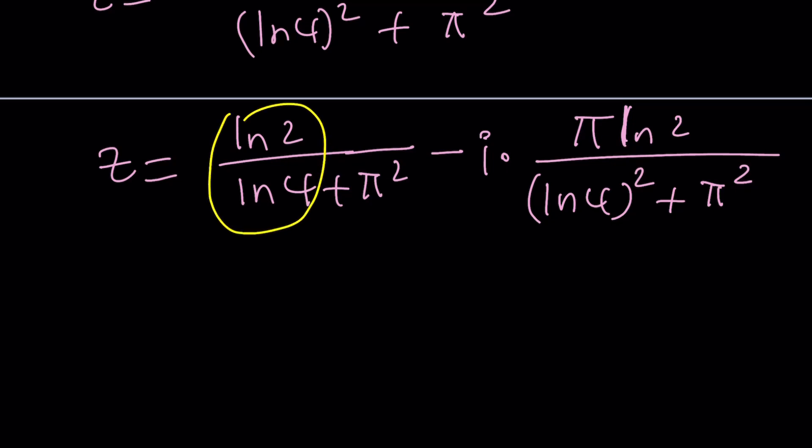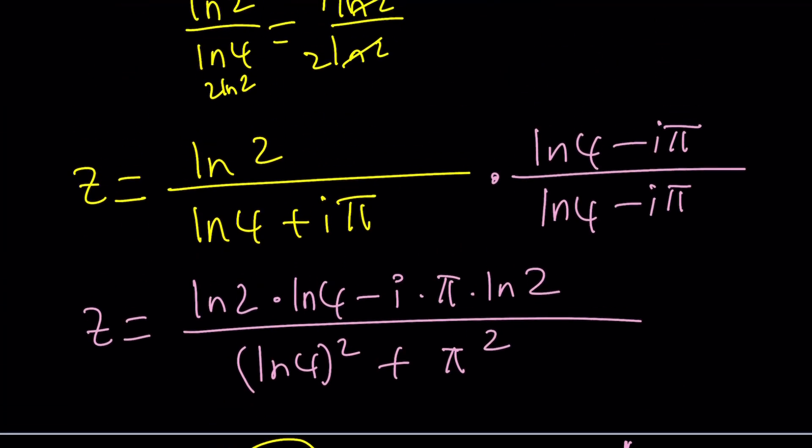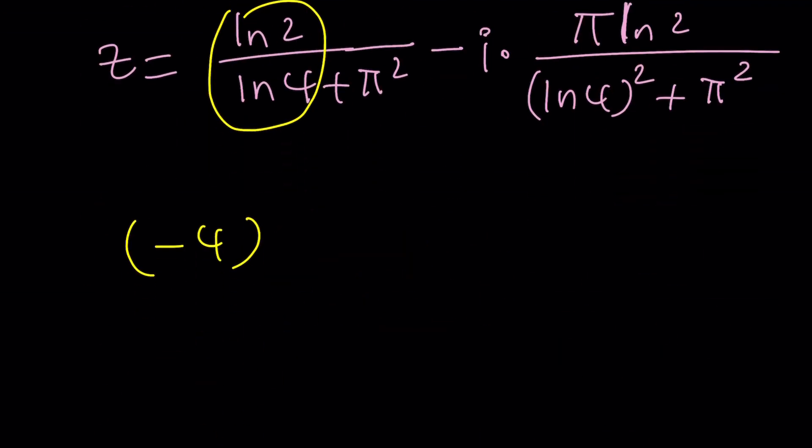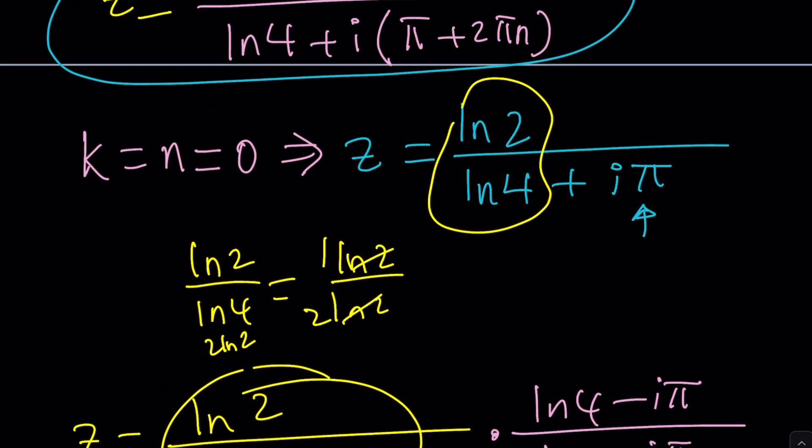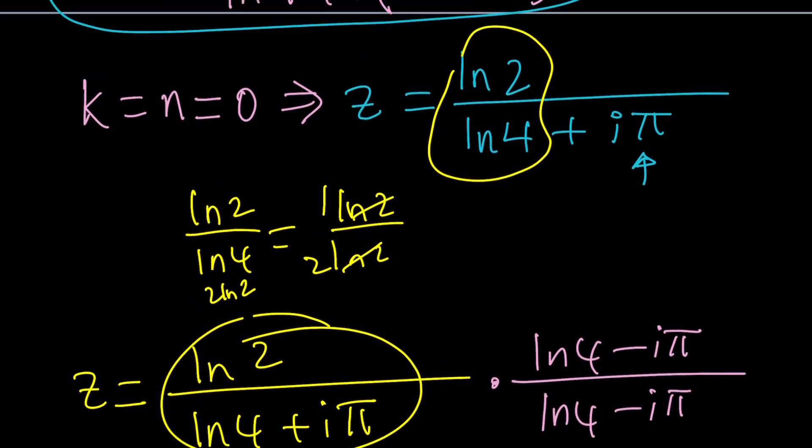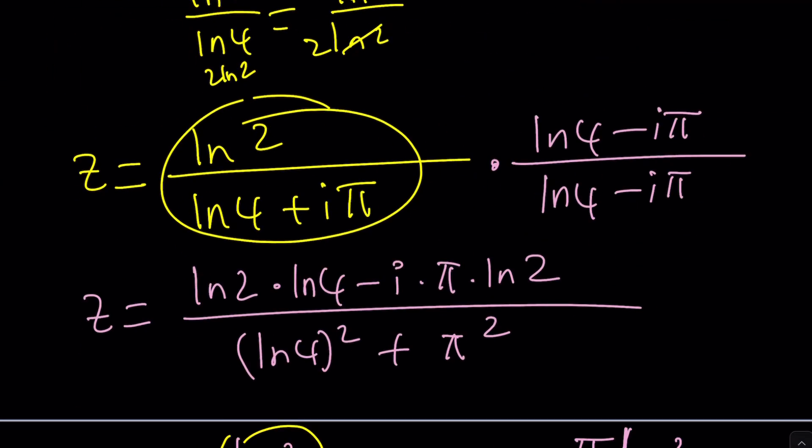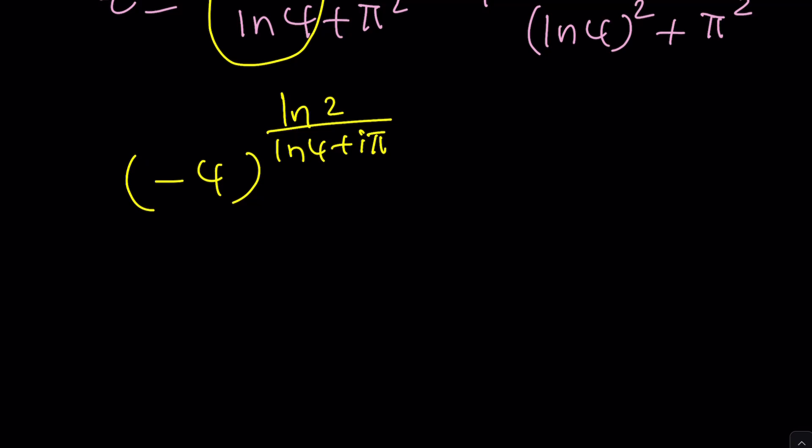Now, we can definitely go ahead and try to plug it in. Maybe not in this form, but in this form. We can replace z with ln 2 to the power ln 4 plus i pi. And then, is this going to give us two, really? Because that's what z looks like. At least when k and n are both equal to zero. And that's for you to find out because we ran out of time.